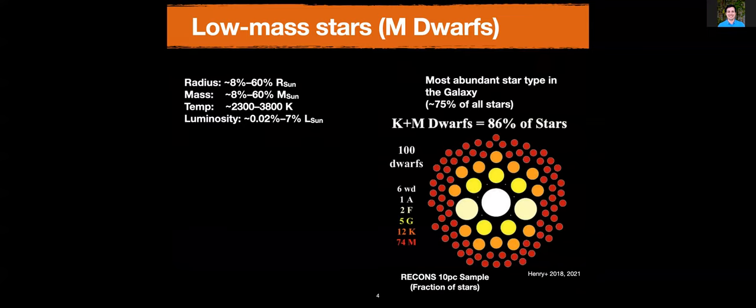Here I'm showing you the census of all objects within 10 parsecs. It's color-coded by spectral type. Within 10 parsecs, M dwarfs plus K dwarfs make up the majority — M dwarfs alone make about 86% of all the stars in this volume. If you extrapolate that, M dwarfs make about 70 to 75% of all the stars in the galaxy. So the vast majority of stars are these small, very ubiquitous stars.